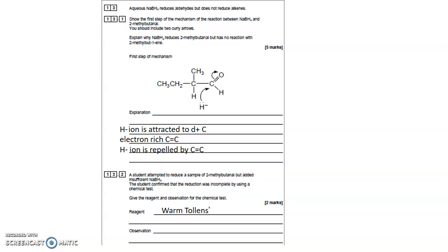The reagent is Tollens reagent. It needs to be warm, so warm Tollens reagent, and it will give a silver mirror. The other option is that you add Fehling solution, it gives a brick-red precipitate.